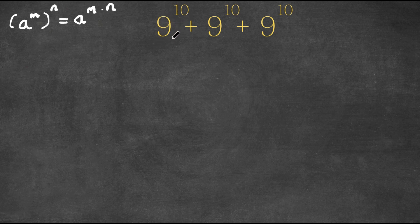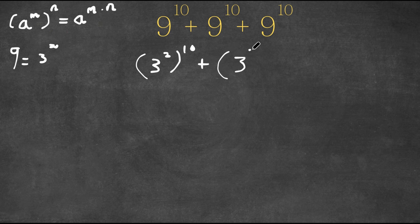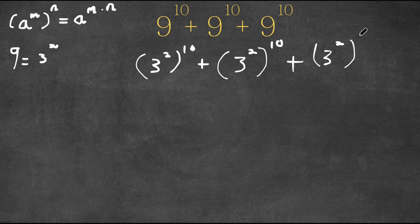So right here we have 9, and 9 is equal to 3 squared. So I'm going to first replace all our 9s here with 3 squared. So we have 3 squared to the power of 10, plus 3 squared to the power of 10, plus 3 squared to the power of 10.